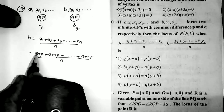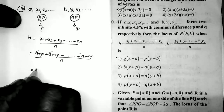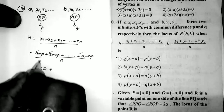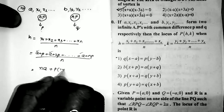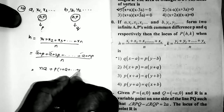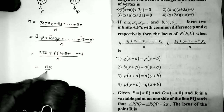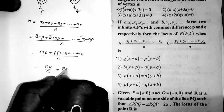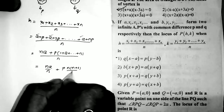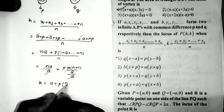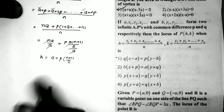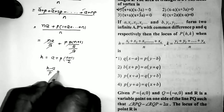Adding all terms: h = [na + p(1 + 2 + … + n)] / n = na/n + p × n(n+1)/2 / n. The n's cancel, giving h = a + p(n+1)/2. Therefore (h - a)/p = (n + 1)/2.